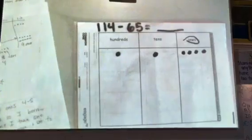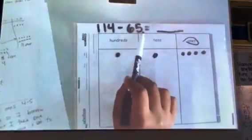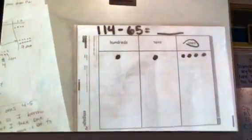I will start with my ones place. Four minus five, which I cannot do, so I will borrow from the tens place.